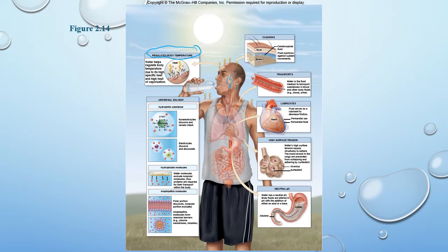Other uses for water within the body: chemically, it is our universal solvent — it has the ability to dissolve substances within the body. Everything from protection to use in our blood for transport. It's going to cushion and lubricate different areas of the body. Sometimes we have to fight some of water's properties as well, such as its high surface tension — if you've been in a biology or chemistry class, you know that when you fill water into a graduated cylinder, you measure it along the meniscus.